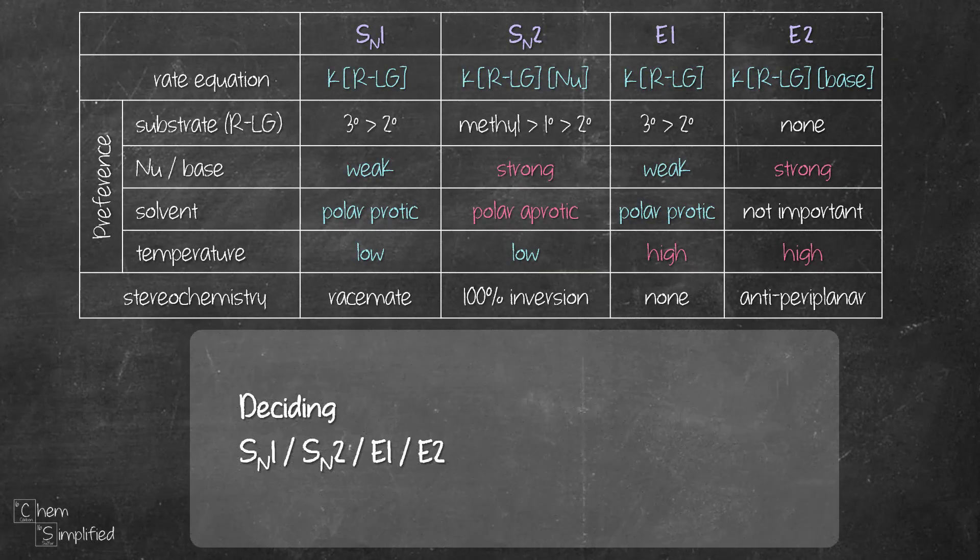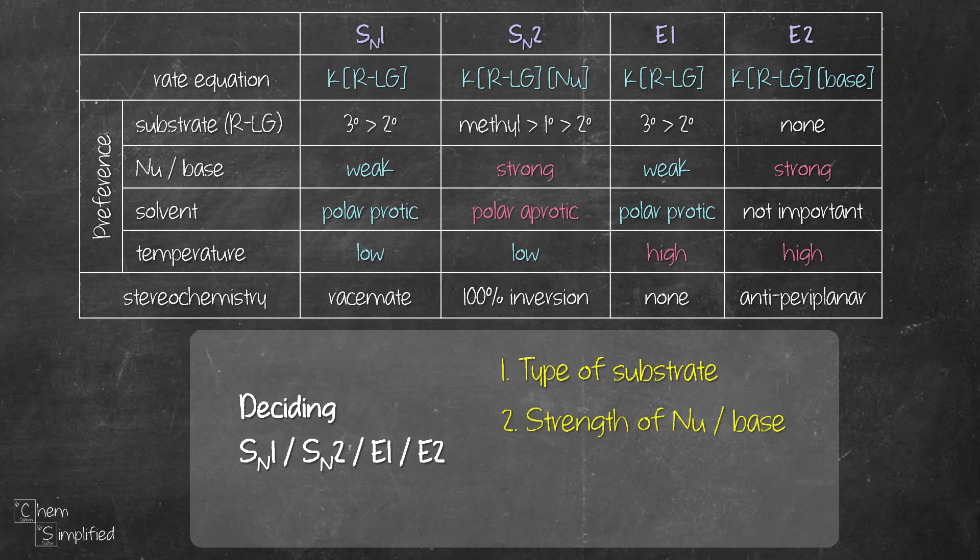Deciding which mechanism will dominate is one of the challenges an Orgo student will encounter. I have a quick and dirty way of figuring out which pathway will dominate based on the given condition. We start by looking at the type of substrate, then the strength of the nucleophile or base, then the type of solvent, and lastly whether heat is involved. Let's test this out using a few examples.